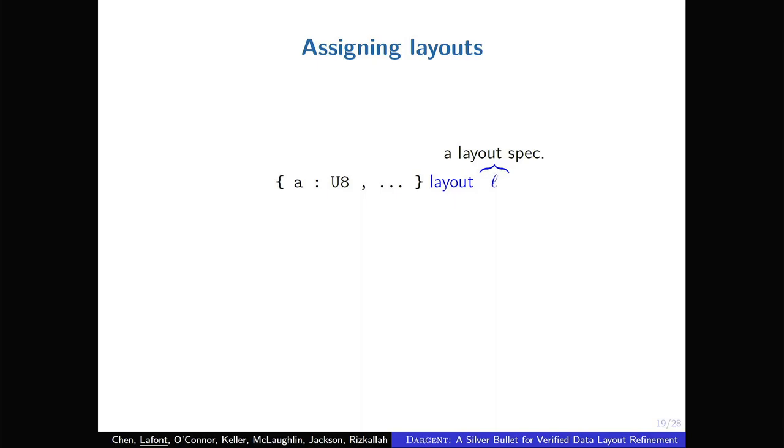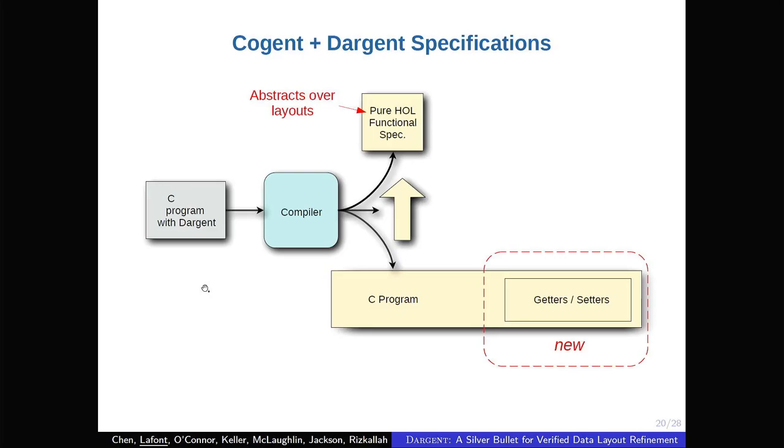So concretely, when you want to assign a layout to a type, you must use the keyword layout and then provide the layout specification. For this to be accepted by the compiler, it must be valid in the sense that it can be well formed. The blocks of memory should not overlap, for example. And also it should be compatible with the type. So this means that within the type system, now we have two new sets of inductive rules that we have implemented.